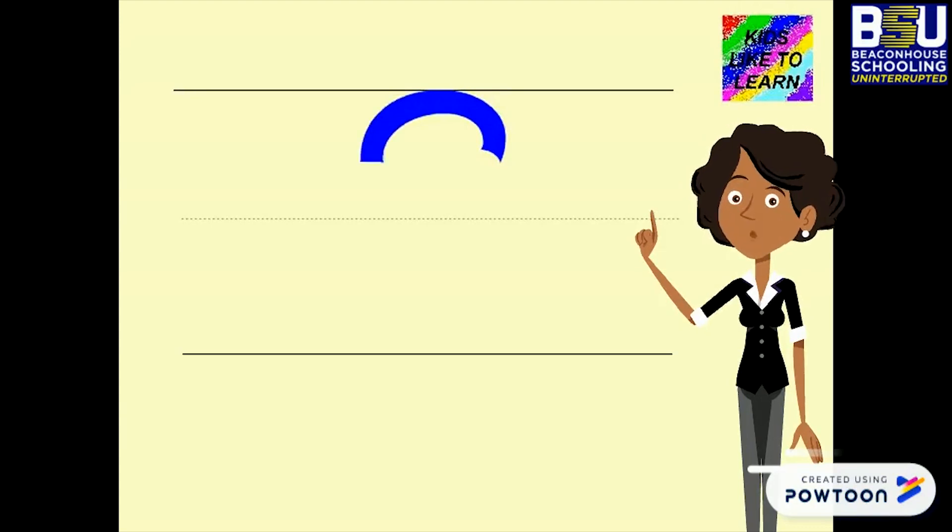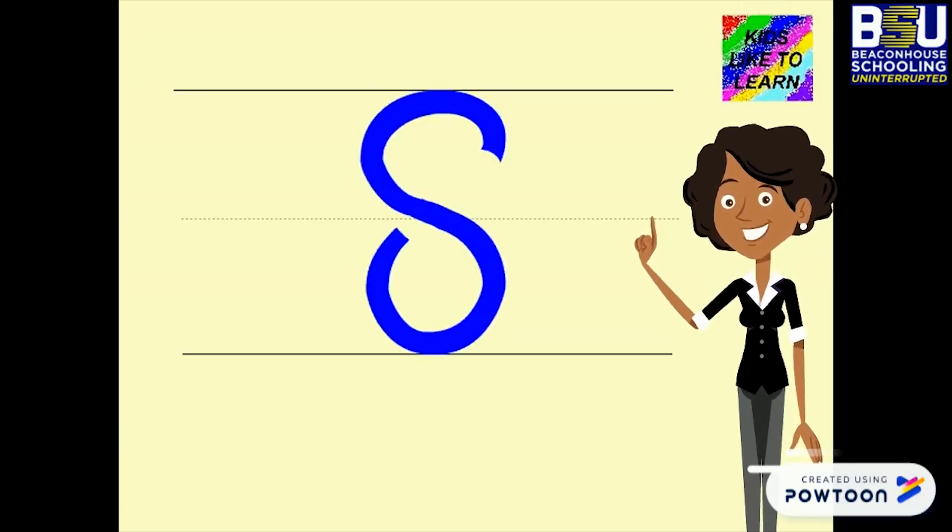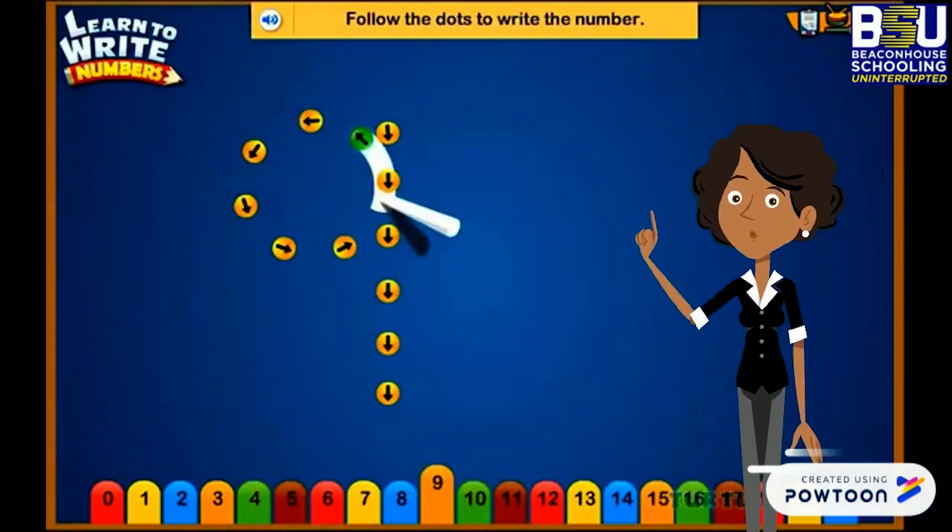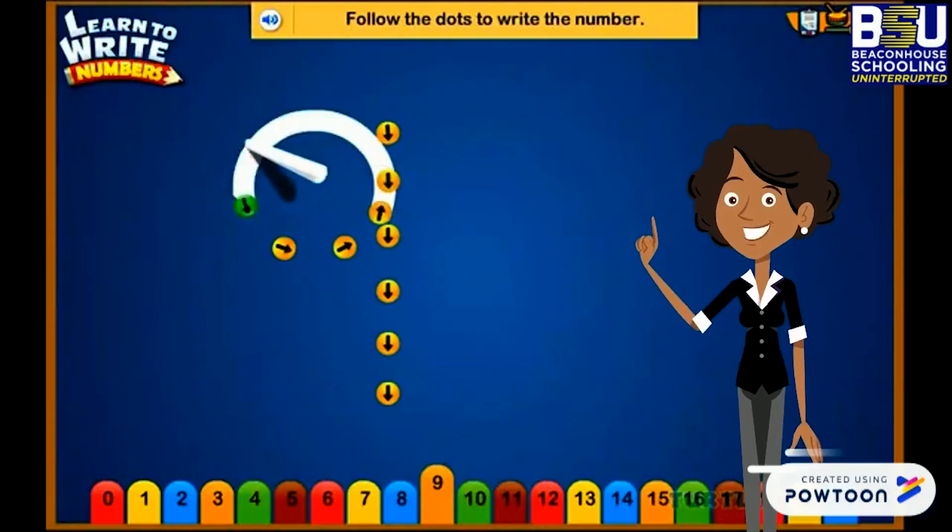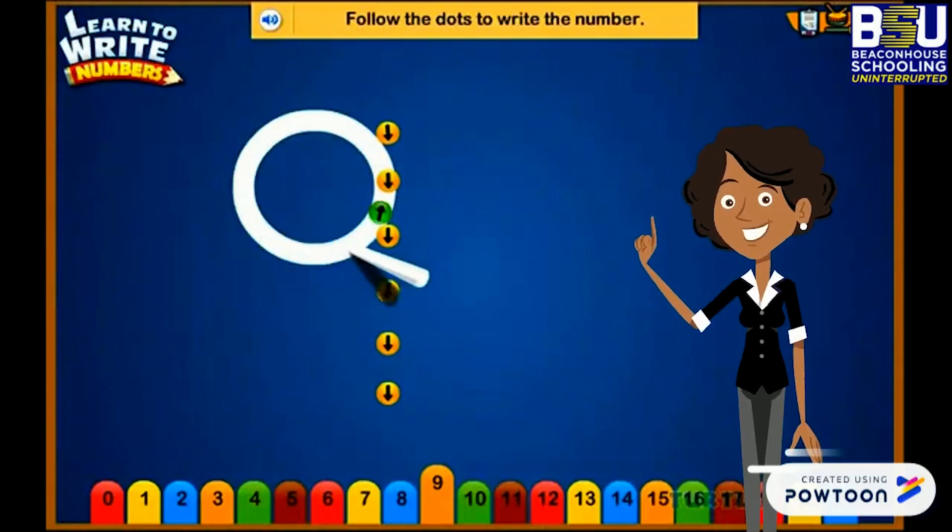Number 8. Make an S. But do not wait. Go back and touch the starting point. Number 9. Make a curve. Go up and then make a vertical line.